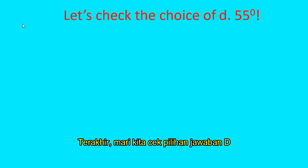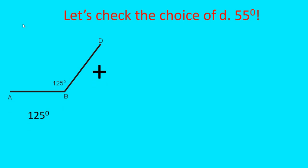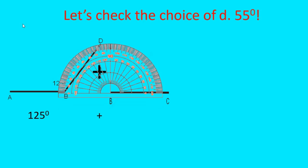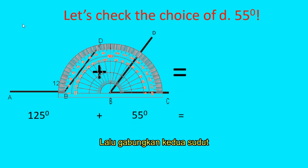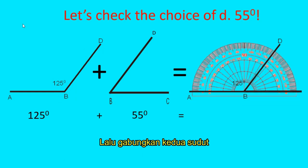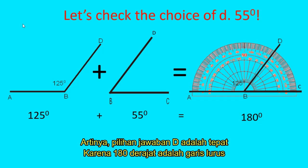The last choice is D, 55 degrees. The steps are the same as choices A, B, and C. First, place an angle of 55 degrees using the protractor, then combine it with the 125-degree angle. Look at the picture — the result is 180 degrees. It means choice D is correct because 180 degrees forms a straight line.